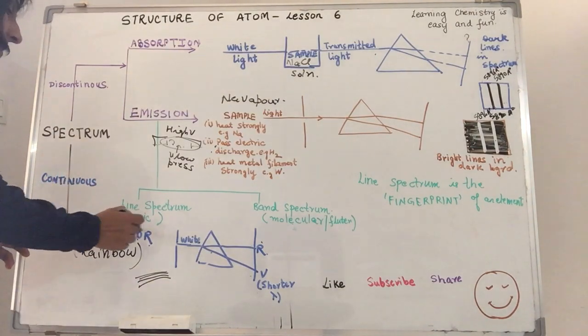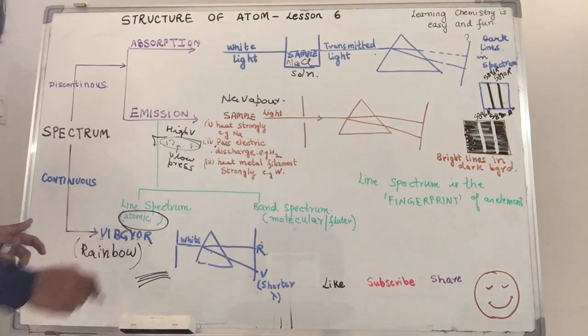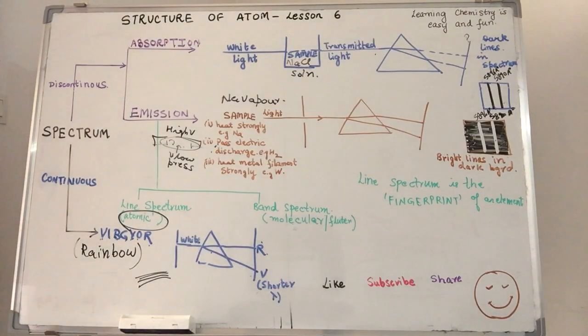Hence, this line spectrum is also called as atomic spectrum.